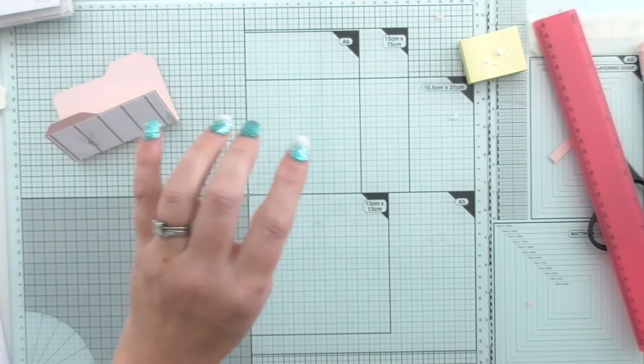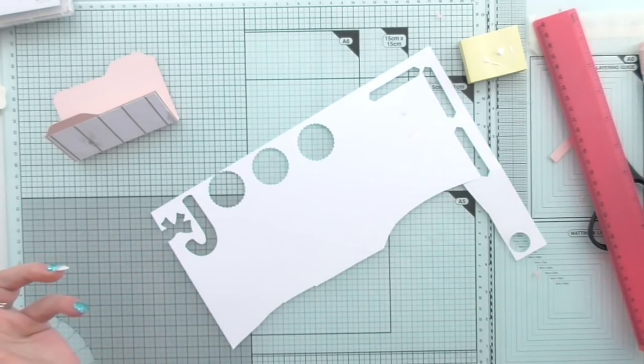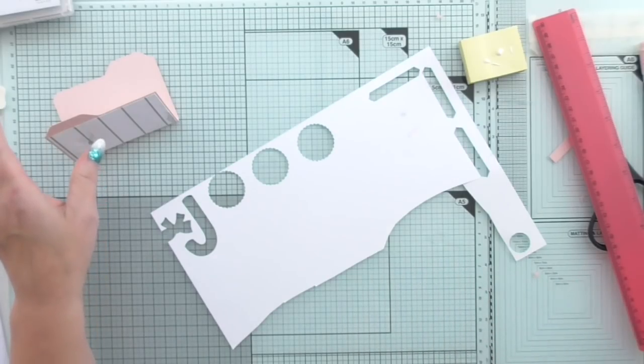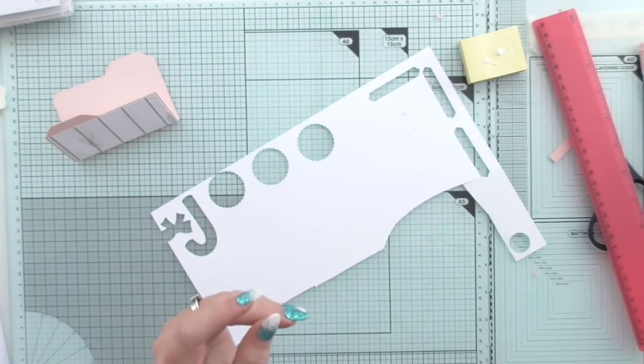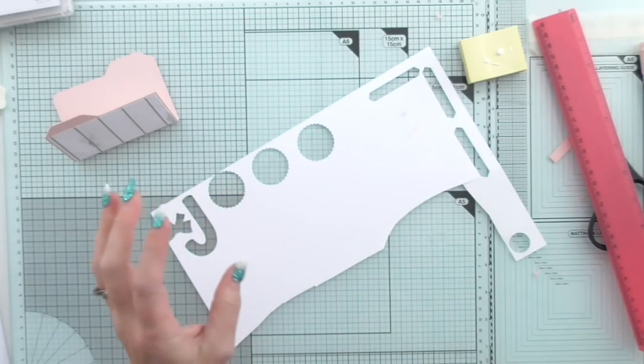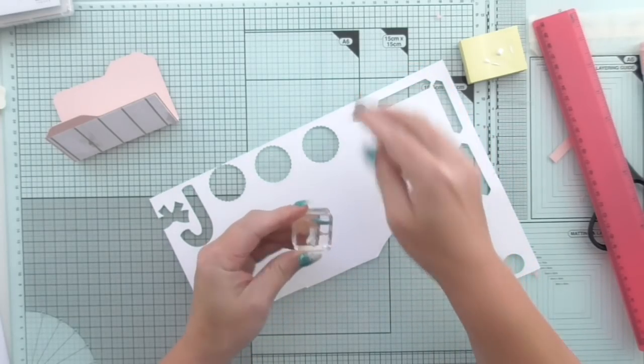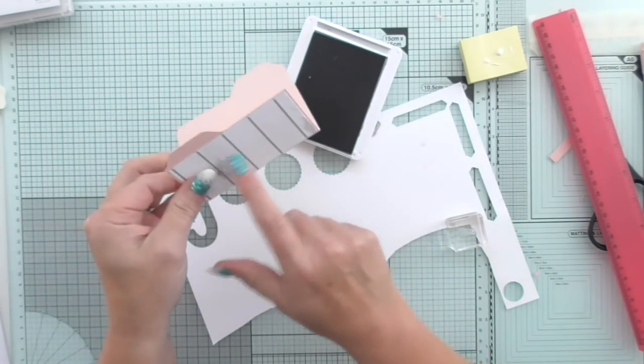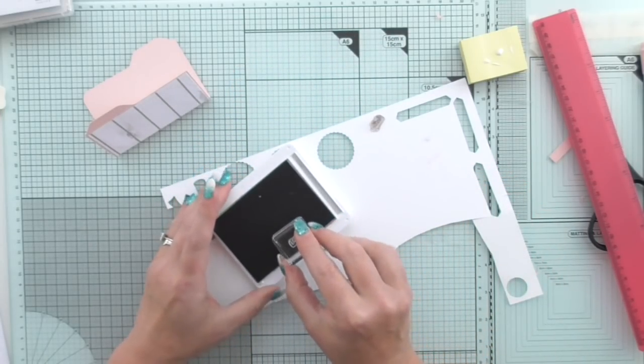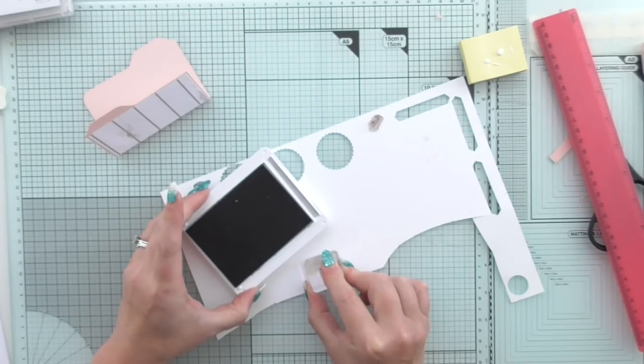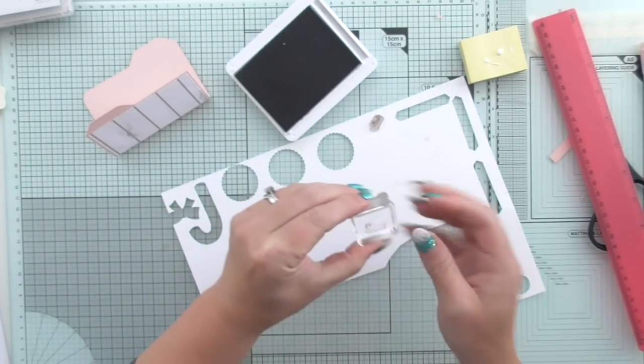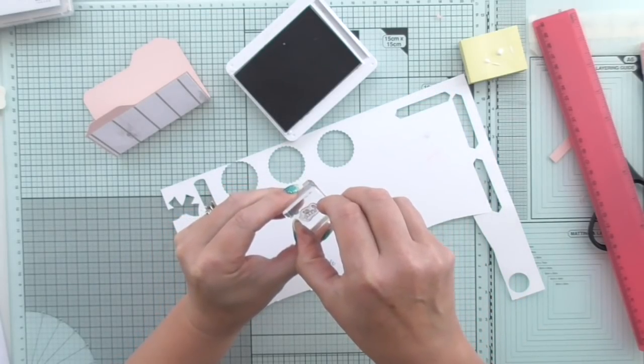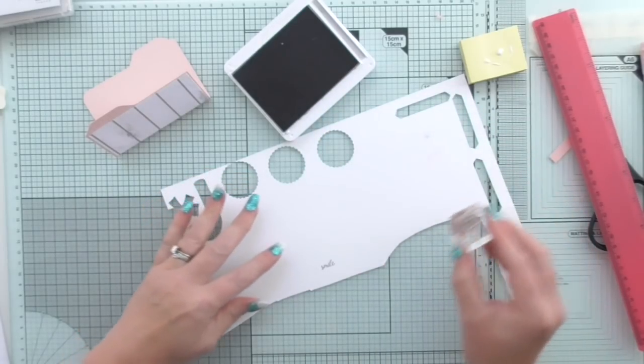We're going to do some stamping now. I'm going to bring some scrap over. The first thing I'm going to do is stamp my little sentiments for my little tabs here. I've got hello and smile, and I've taken those from the tabs for everything set. The ink that I'm using today is grey granite because I think it coordinates nice with that lovely paper. The first one that I'm stamping is smile.